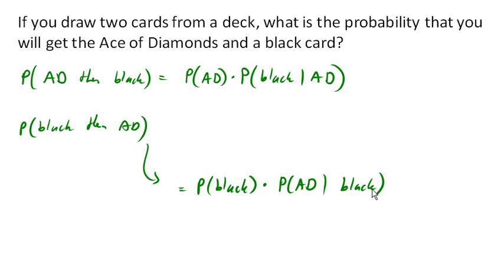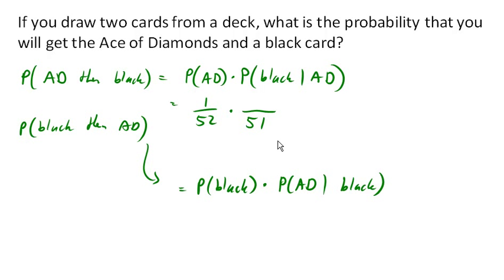What's the probability that we pull the ace of diamonds? There's only one of them in the deck, so 1 out of 52. How many ways could we pull a black card, given that the first card was the ace of diamonds? Given the first card was an ace of diamonds, there's one less card in the deck, but diamonds are not black, so there are still 26 black cards. So our probability here ends up being 26 out of 51, giving 1 out of 102.